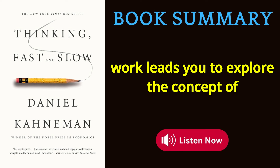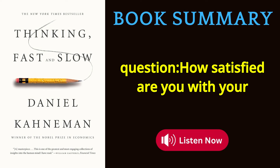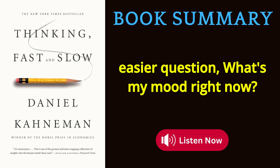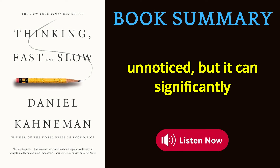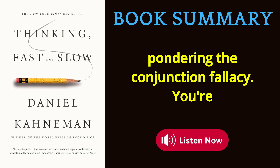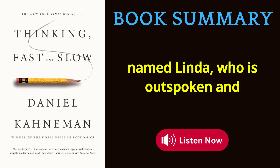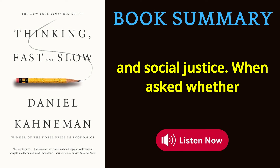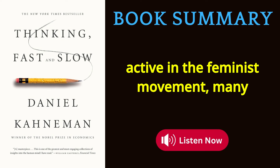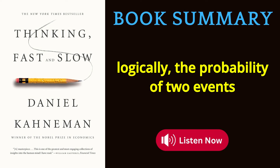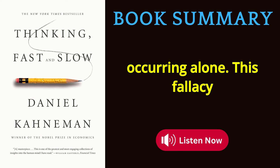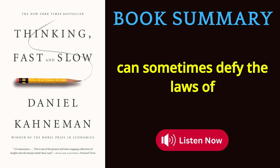The concept of substitution emerges when you're asked a difficult question — 'How satisfied are you with your life?' — and your brain substitutes an easier one: 'What's my mood right now?' You also encounter the conjunction fallacy through the famous Linda problem: Linda is outspoken and concerned with discrimination and social justice. When asked whether Linda is more likely to be a bank teller or a bank teller active in the feminist movement, many choose the latter — but logically, the probability of two events together cannot exceed either alone. This illustrates how intuitive judgments can defy the laws of probability.